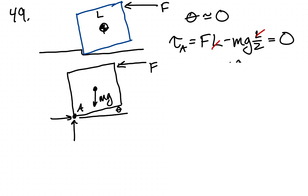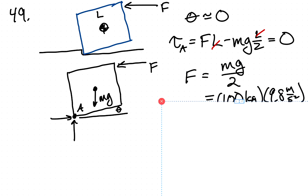and we can simply solve for F, and it is the weight of the box divided by 2, and we calculate the weight of the box, and divide it by 2, and we get 980 newtons.